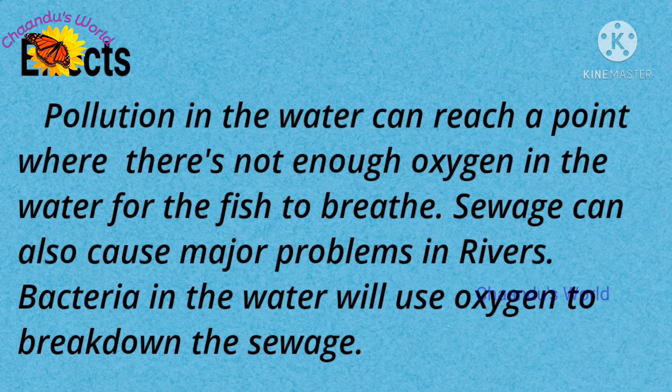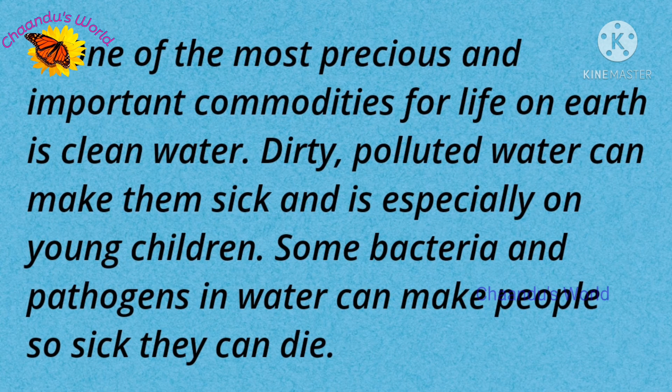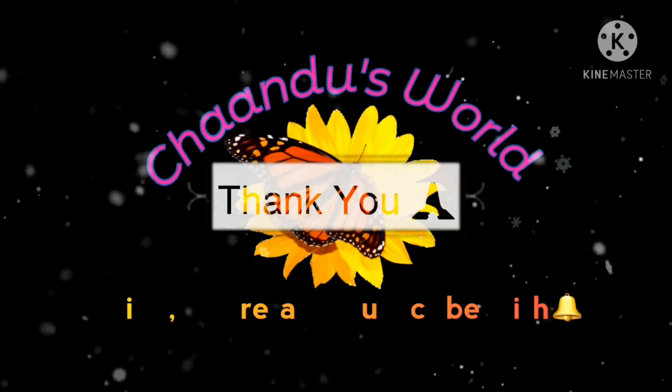Pollution in the water can reach a point where there is not enough oxygen in the water for the fish to breathe. Sewage can also cause major problems in rivers, as bacteria in the water will use oxygen to break down the sewage. One of the most precious and important commodities for life on earth is clean water. Dirty, polluted water can make people sick and is especially harmful to young children. Some bacteria and pathogens in water can make people so sick they can die.